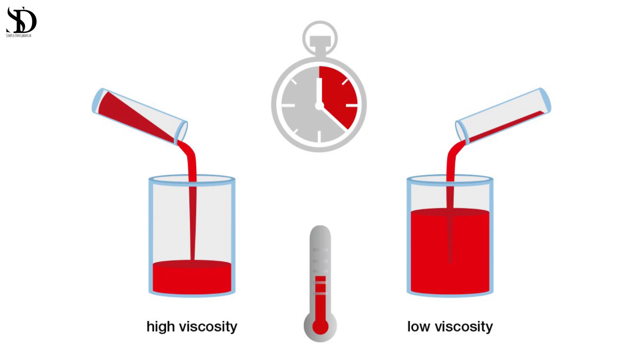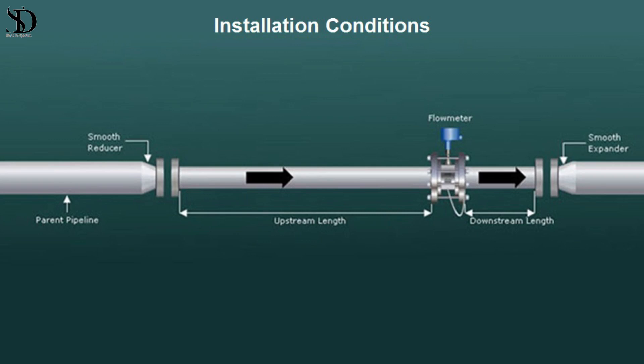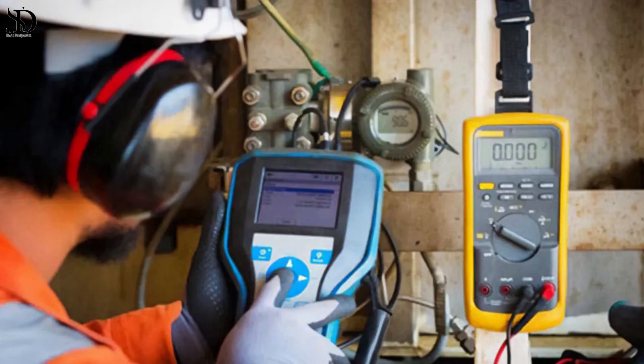Factors affecting flow measurement. Fluid properties — viscosity, density, and temperature — can significantly impact flow measurements. Installation conditions: accurate measurement often depends on proper installation, including the location of the flow meter, pipe size, and straight pipe runs upstream and downstream of the meter. Regular maintenance and calibration are crucial to ensure accuracy and reliability.